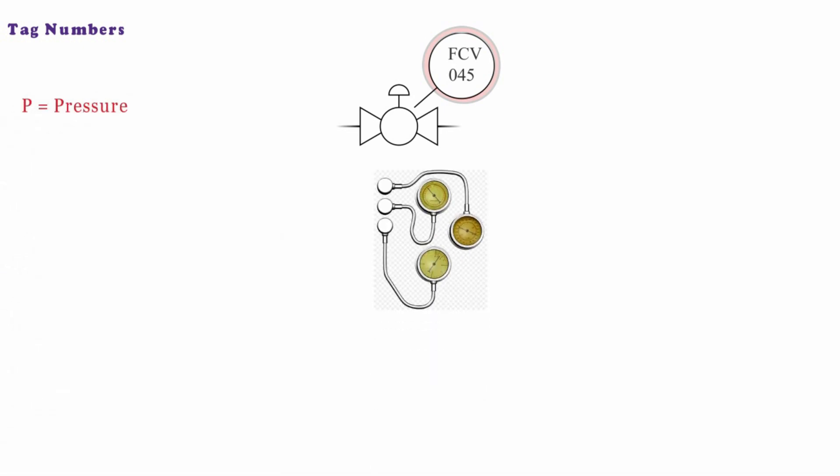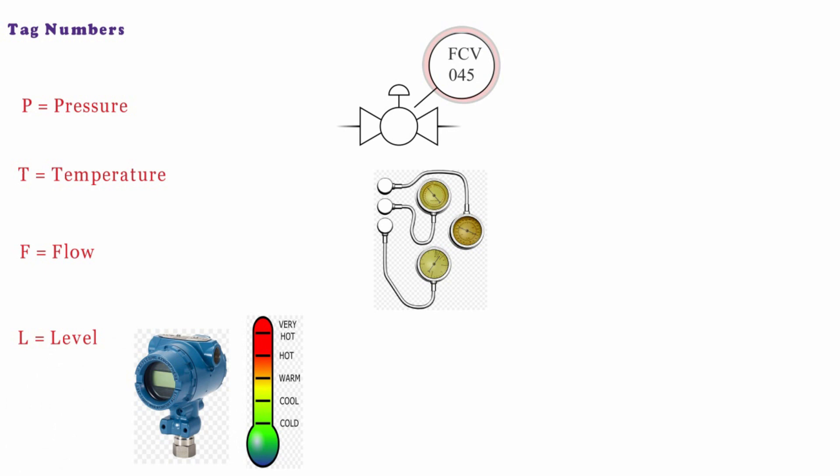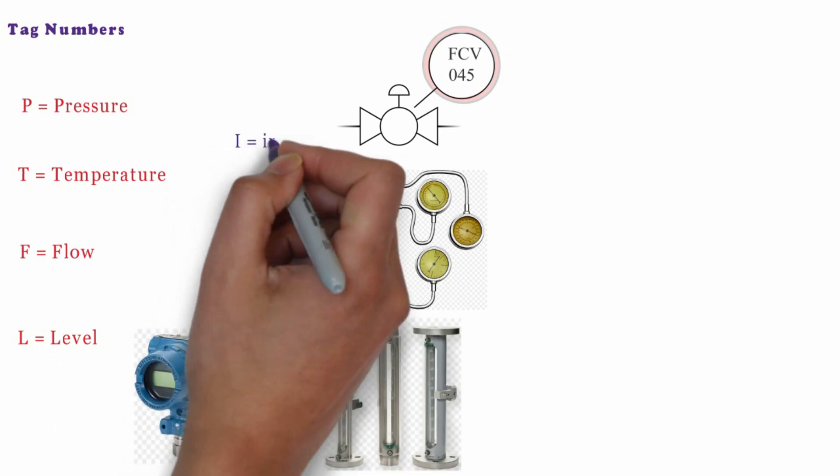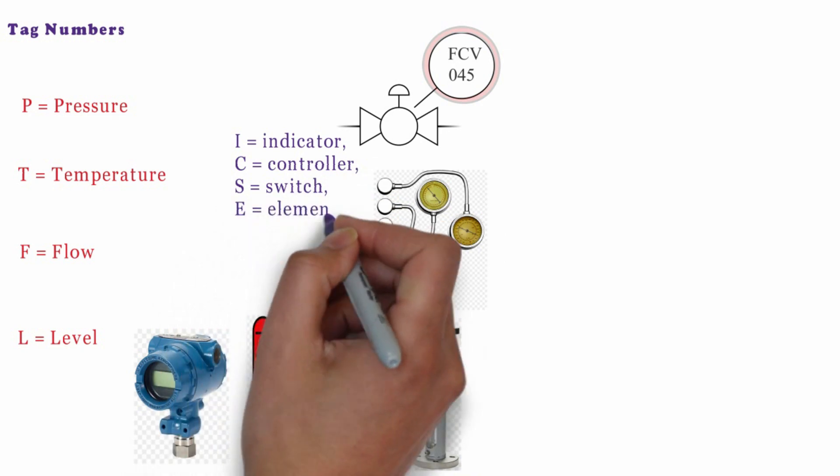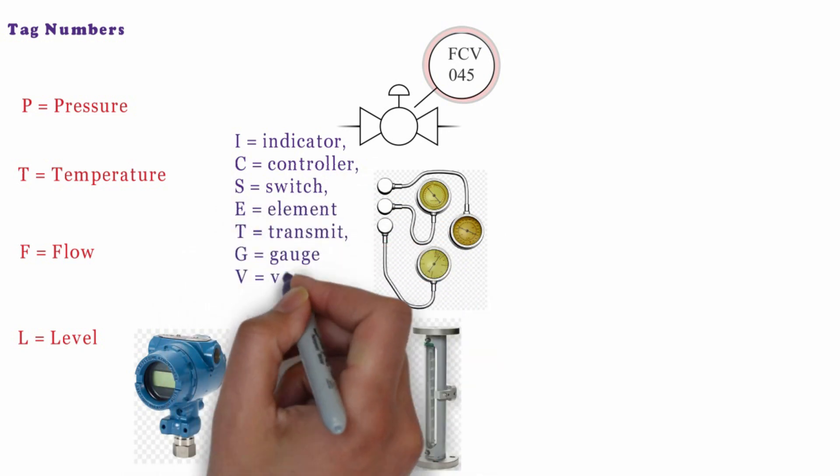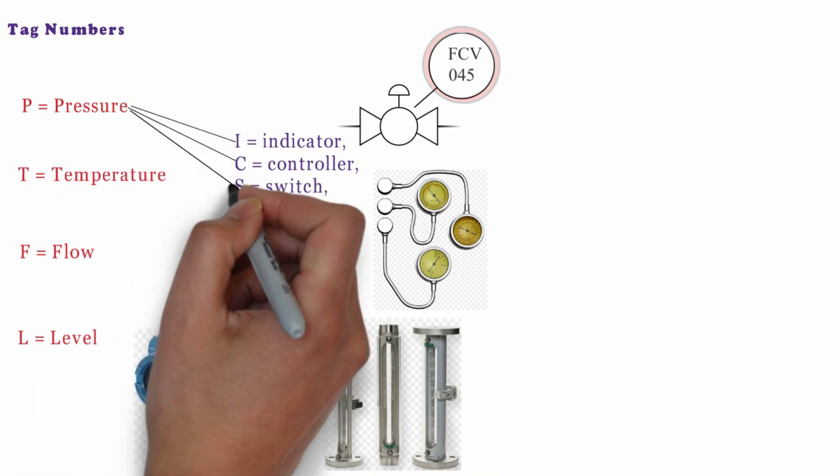For example, P is for pressure, T is for temperature, F is for flow and L is for level. And all the other indicators, controllers, switch, element, transmit, gauge and valve are typically the functions they can perform.